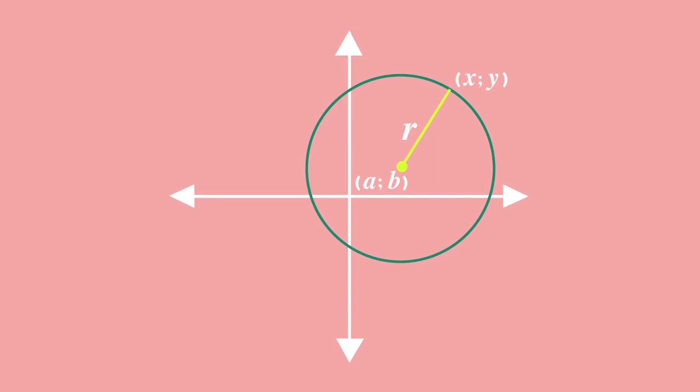To find the length of the radius, we can use Pythagoras again. This is actually the same as using the distance formula that you know. If you make a right angle triangle using r as the hypotenuse, you can work out the lengths of two sides of the triangle.